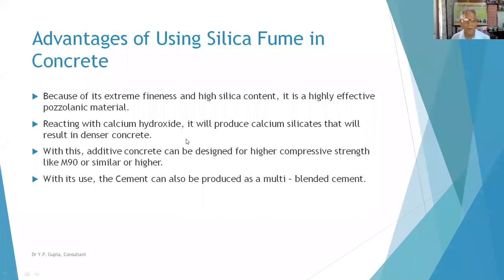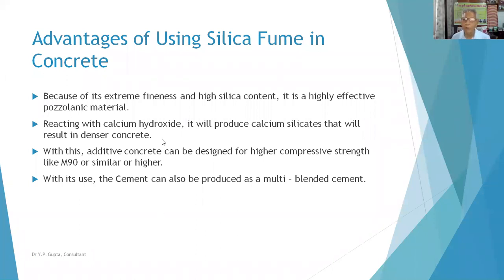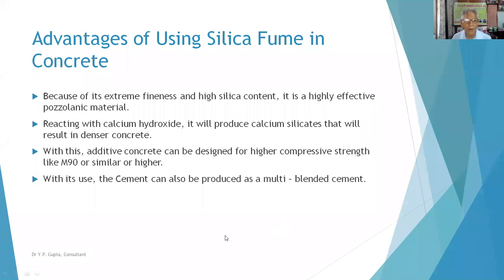Reacting with calcium hydroxide, silica fume produces calcium silicate hydrate, resulting in denser concrete. With this additive, concrete can be designed for much higher compressive strength like M90 or even higher — we are trying to produce ultra-high strength concrete like M150 and above. This cannot be achieved by other methods except with silica fume. With this, blended cement can also be produced as a multi-blended cement — not only blending silica fume but also fly ash and others — producing all of them together to achieve strengths as high as M250.